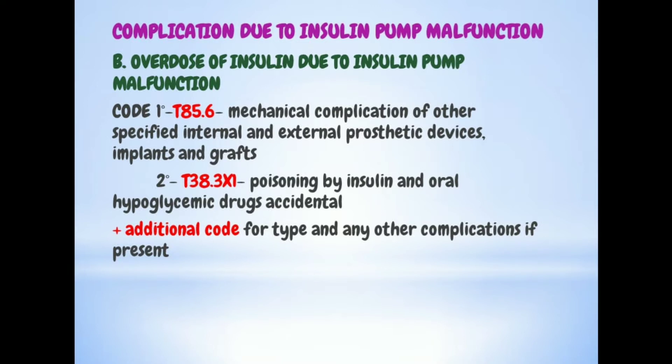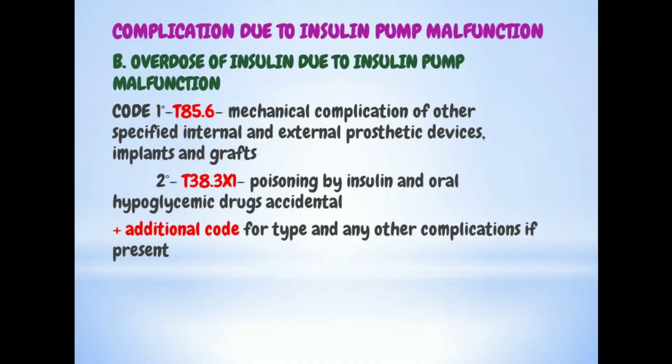For insulin pump malfunction causing an overdose, the exact same guidelines and codes apply: first T85.6 for the malfunction, second T38.3x1 for poisoning by insulin or oral hypoglycemics, and third the type of DM. There is no difference between the underdose and overdose coding sequences — do not get confused.